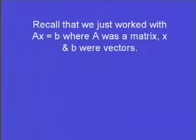So the difference is we were doing A little x equals little b. A was a matrix. X and B were both just vectors.